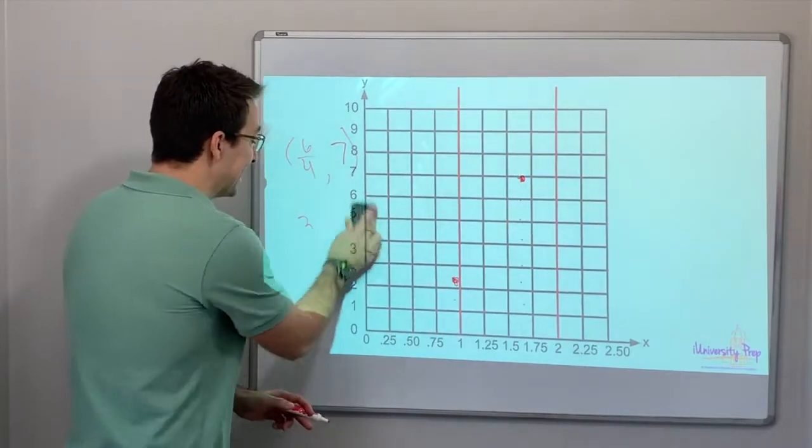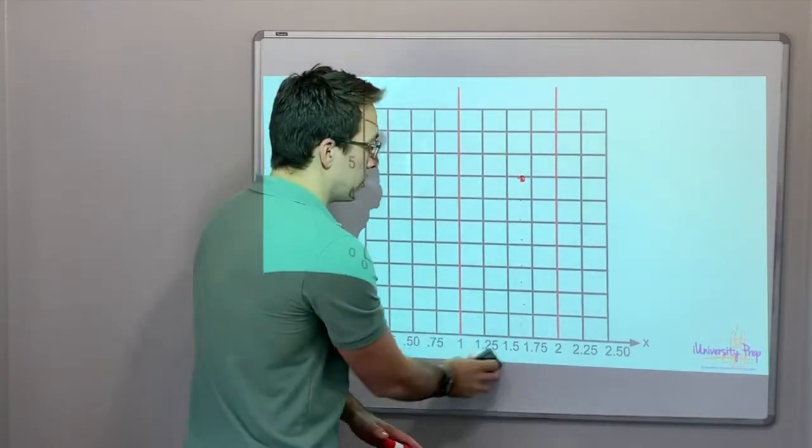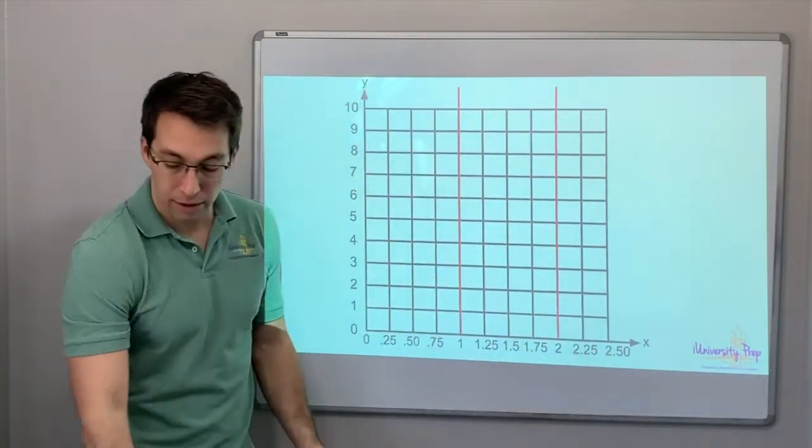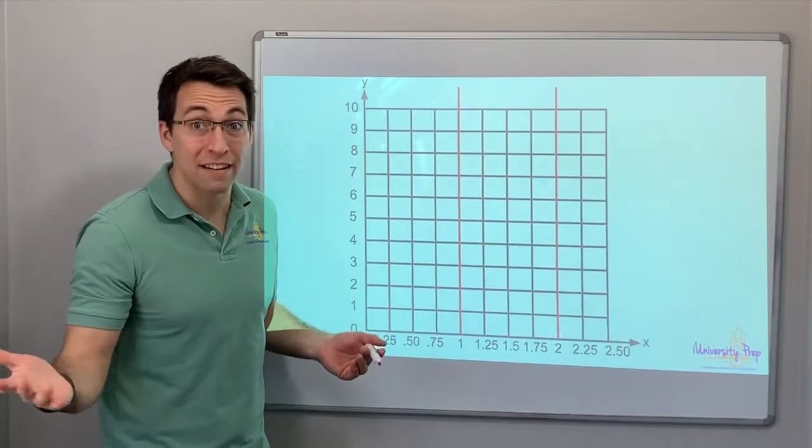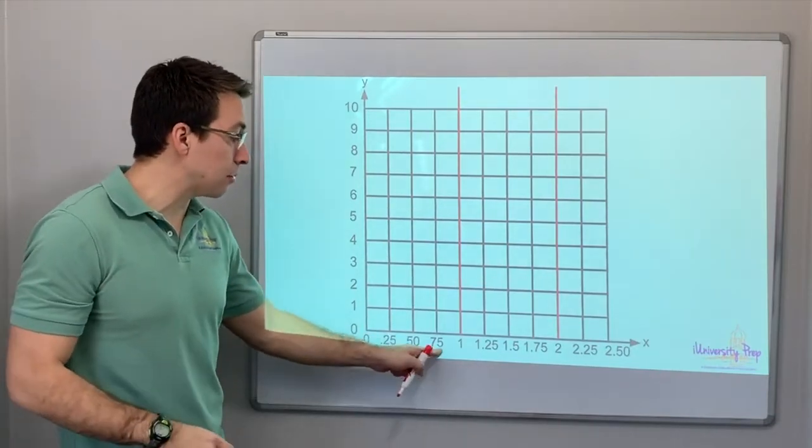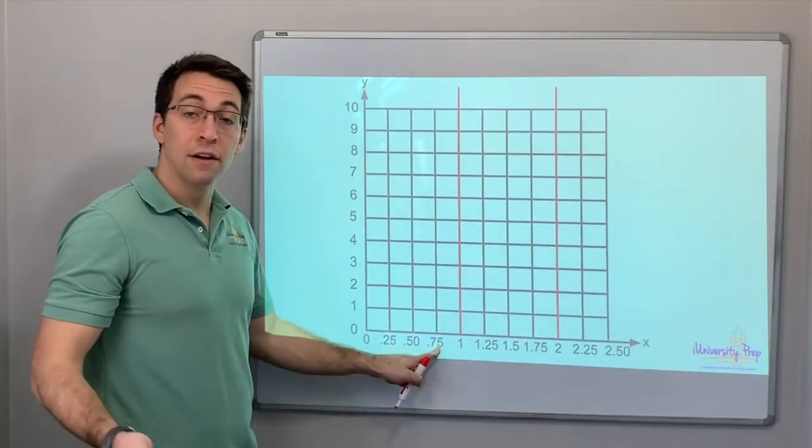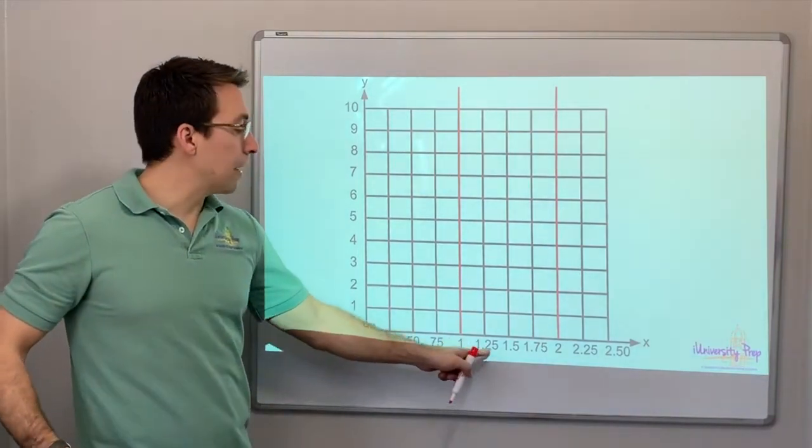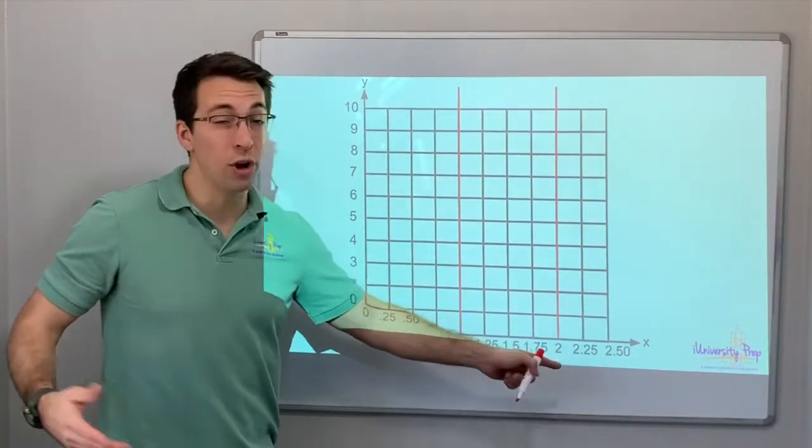Okay. So this same coordinate plane, but instead of using fractions, I am showing you with decimals. Right? What is 1 quarter? It's 25 cents. 2 quarters is 50 cents. 3 quarters is 75 cents. If you have 4 quarters, what do you have? A dollar. A dollar 25, a dollar 50, a dollar 75, two dollars. That's fine.